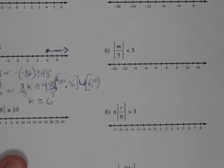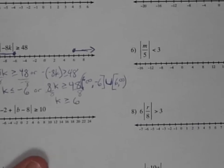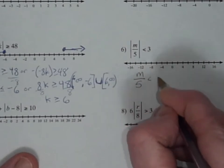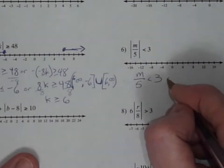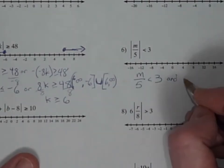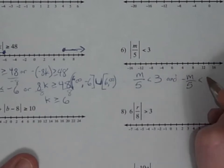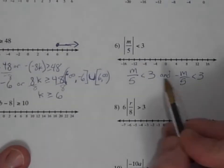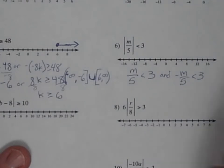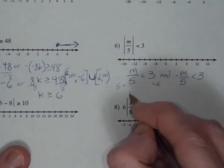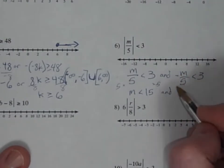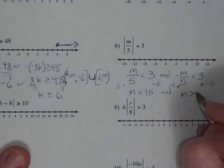Okay, number 6 — same type of problem, a little fewer negatives. Either this number is less than 3, so n divided by 5 is less than 3. The less than means it's an and — it's going to be an intersection. Or the negative of that is less than 3. Those are the two options. Multiply both sides by 5 and m is less than 15. And multiply both sides by negative 5 — m, flipped inequality, is greater than negative 15.